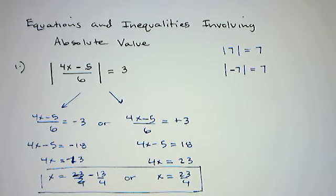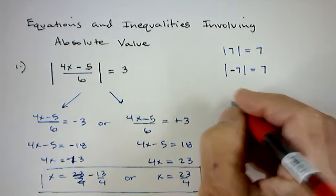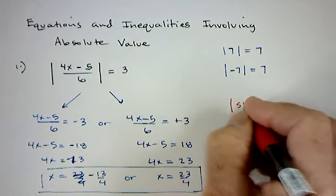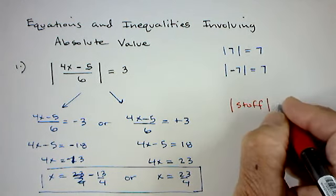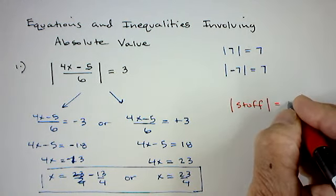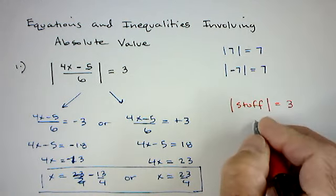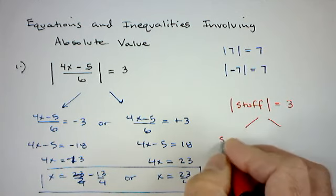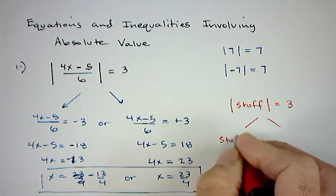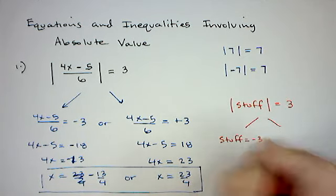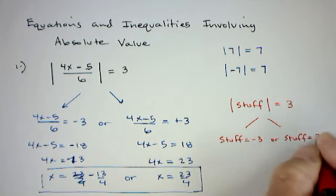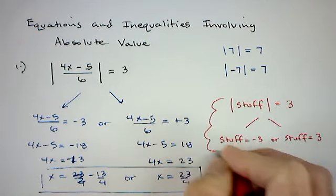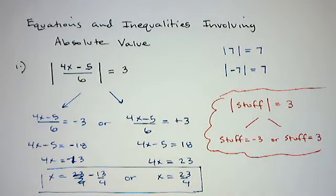Essentially, if you see an absolute value equation, here are the only formulas you need: if you've got the absolute value of some stuff equal to a number like three, then you have two situations — either the stuff inside equals negative three, or the stuff equals positive three. That's how you handle absolute value equations.